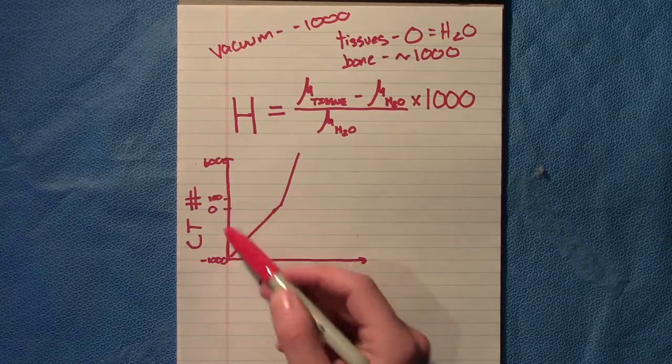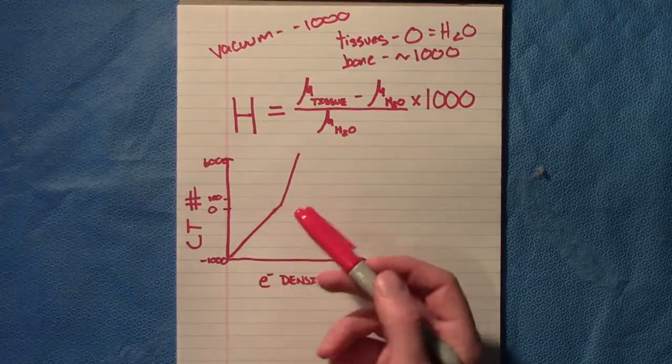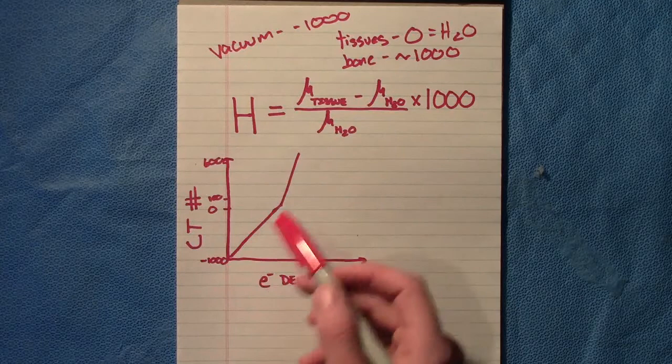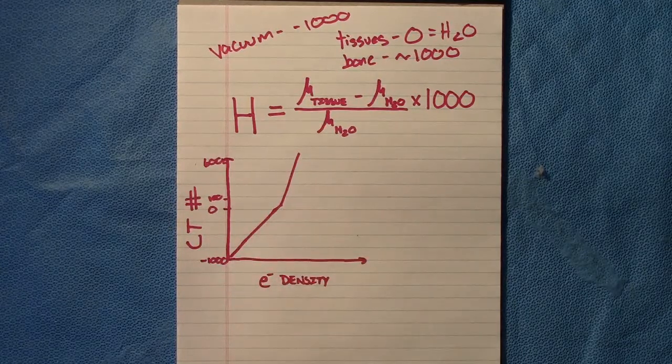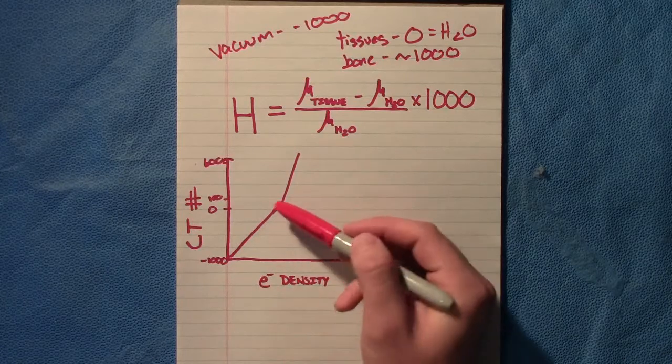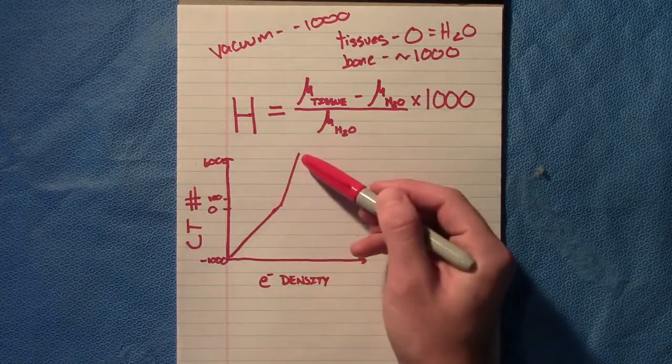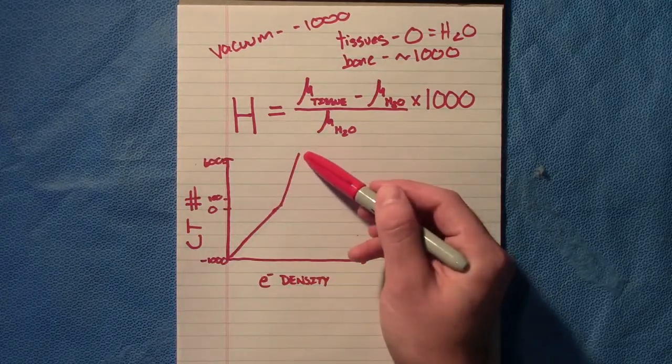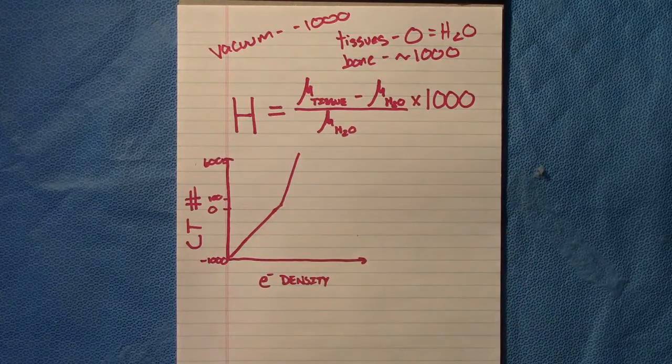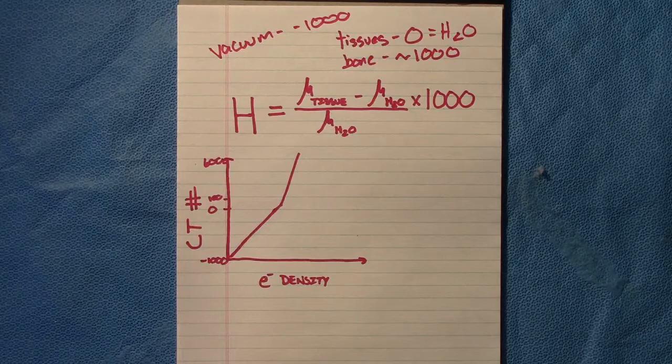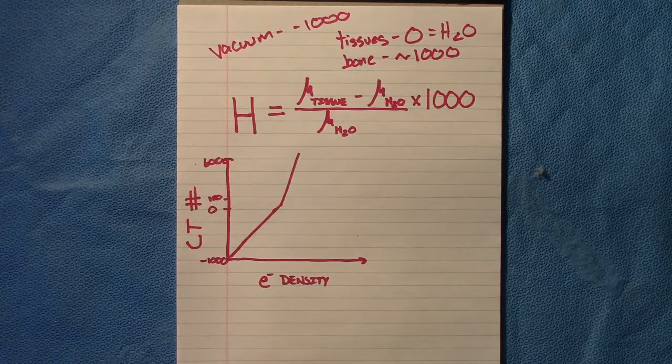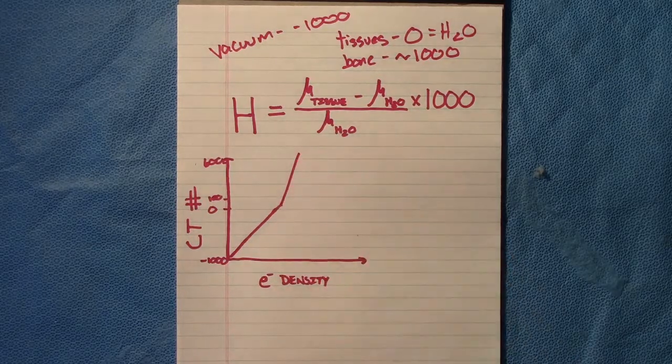So typically from negative 1000 to zero to 100, that's typically lung to soft tissue. That is where you're going to see a linear portion of the curve. But once you hit soft tissue going into denser materials like bone, you're going to see that the attenuation between the Compton and photoelectric interactions changes, and that is what causes this non-linear portion of this curve.